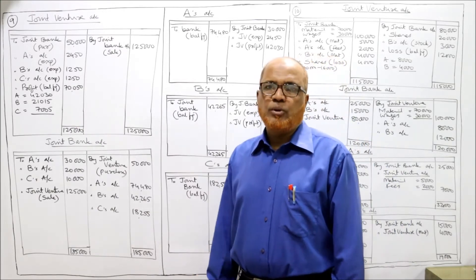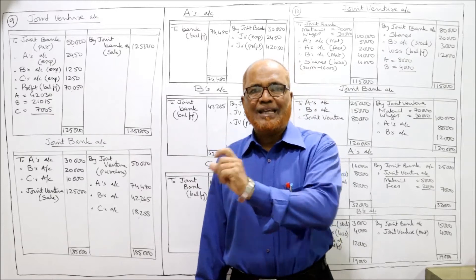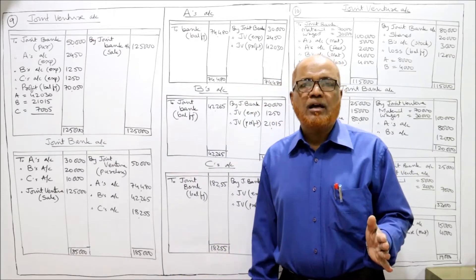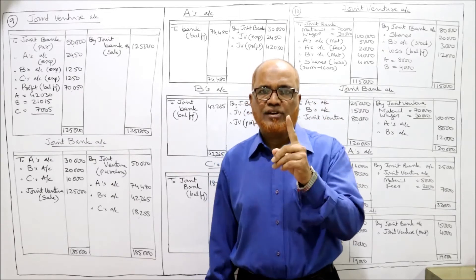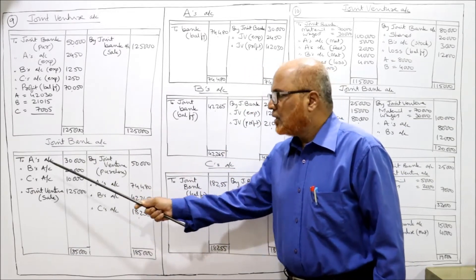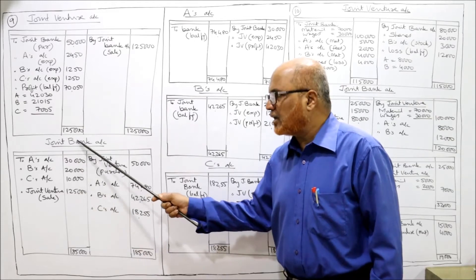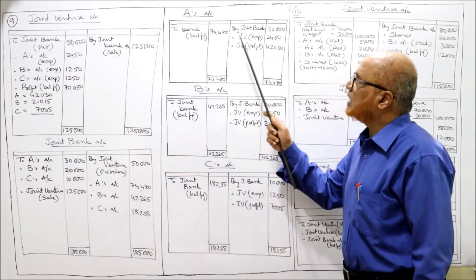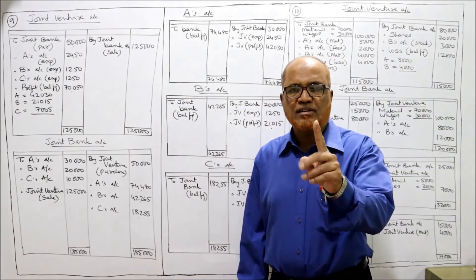First of all A, B and C contributed - 30,000, 20,000, 10,000 respectively. These are the contributions made by A, B and C in the venture. Joint bank account is opened. The entry will be: joint bank account debit to A's account, to B's account, to C's account. Joint bank account debit 30,000; to A's account 30,000, to B's account 20,000, to C's account 10,000. So A, B, C accounts are credited by joint bank. Post it.